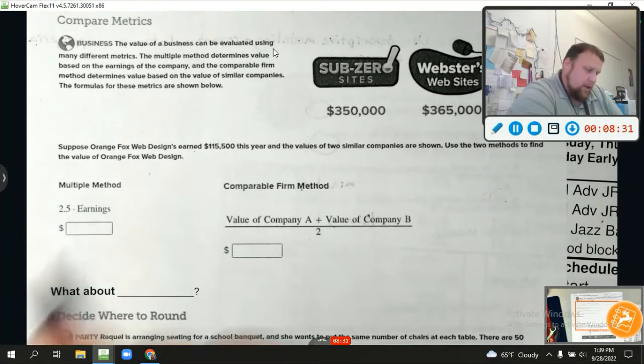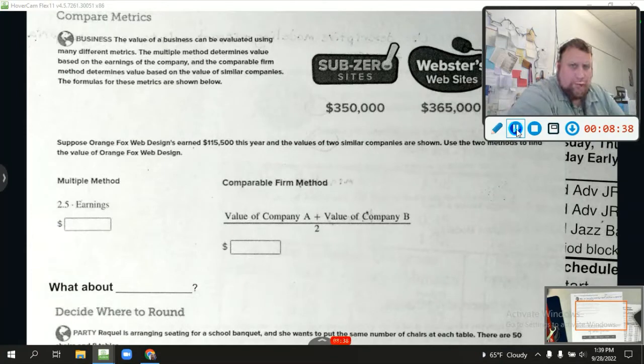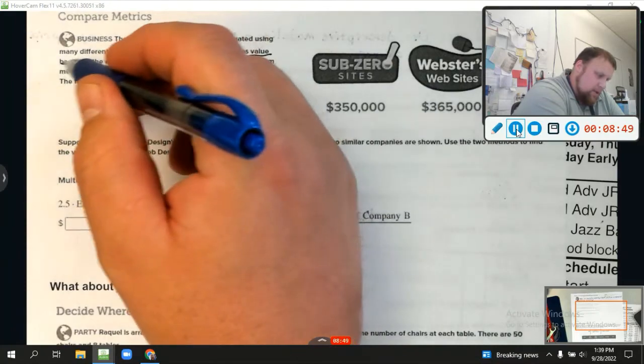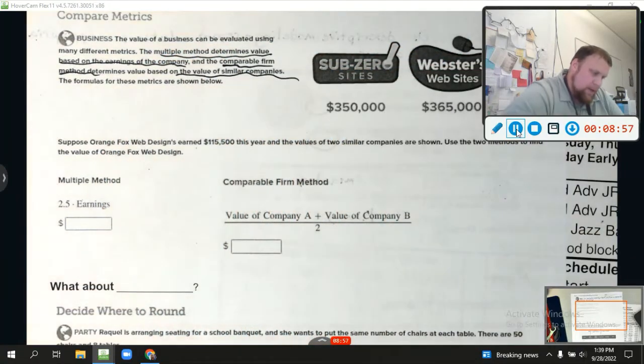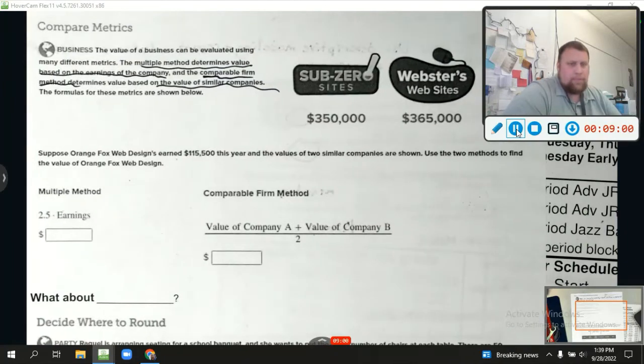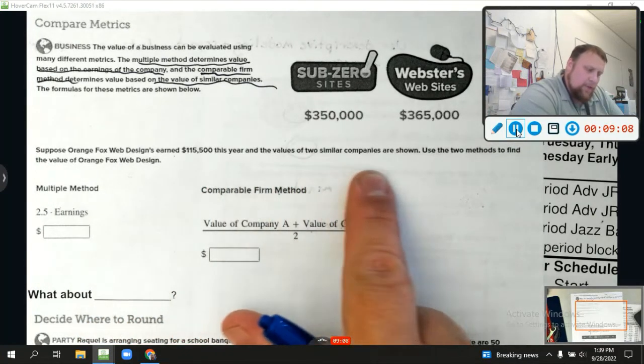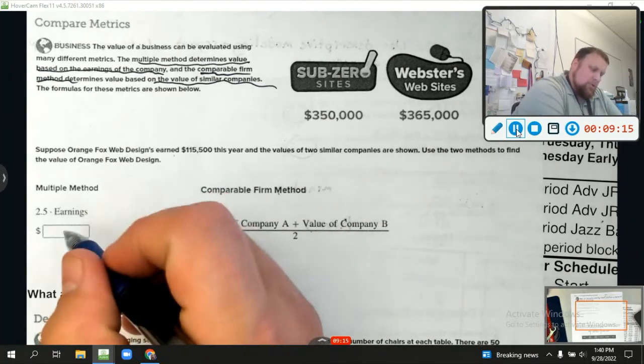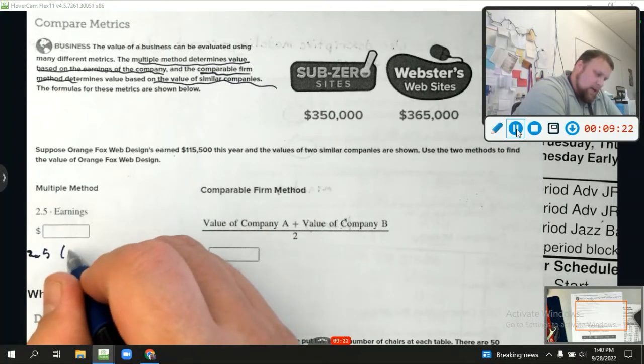Suppose Orange Fox Web Designs earned $115,500 this year. And the value of the two similar companies are shown. Use the two methods to find the value of Orange Fox Web Design. So the multiple method just says take the number 2.5 multiplied times your earnings. Let's do that. We'll have 2.5 times 115,500. And what does that equal? I'm not going to put it in this box up here. But let's do it. 2.5 times 115,500. Looks good. And that comes out to 288,750. So the value of this company using the multiple method is 288,750. That's pretty good.